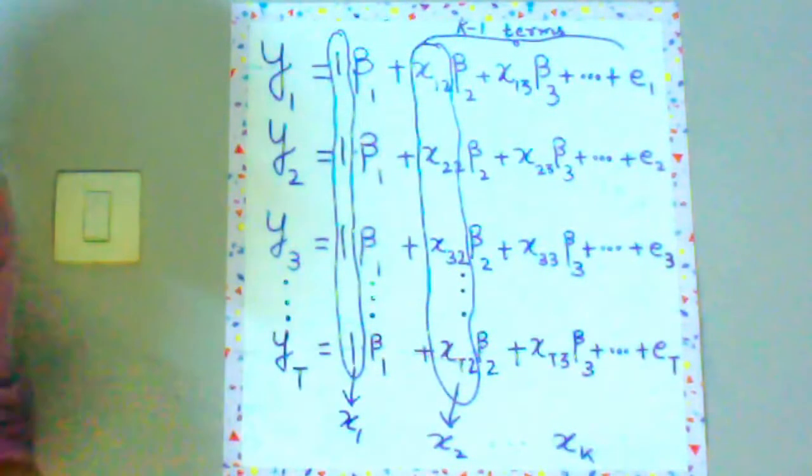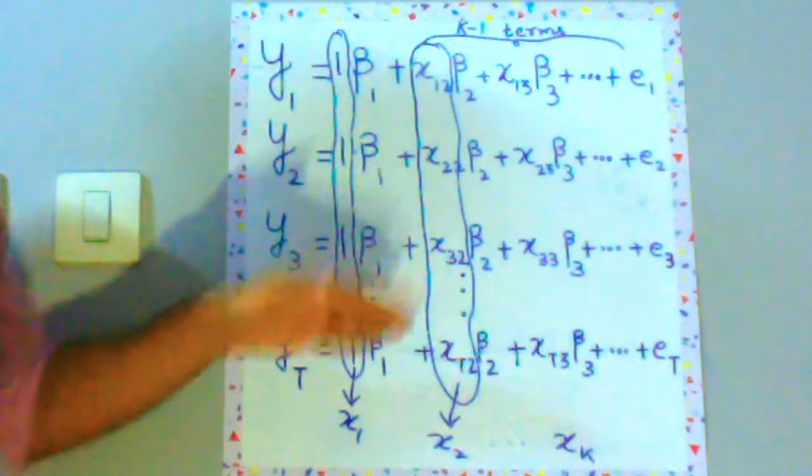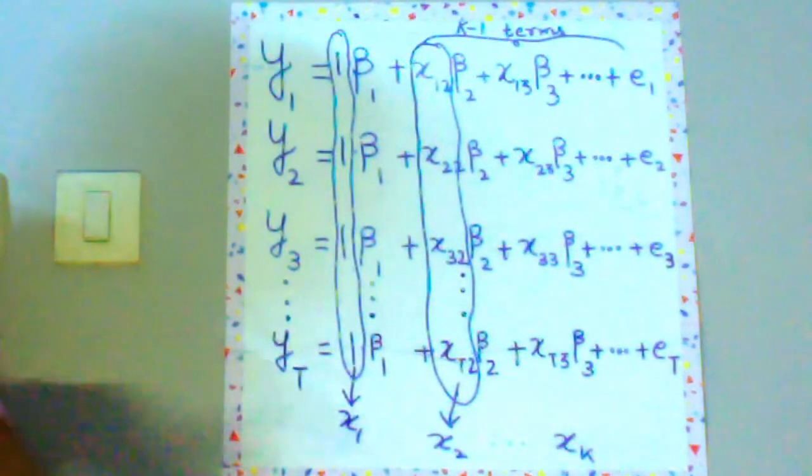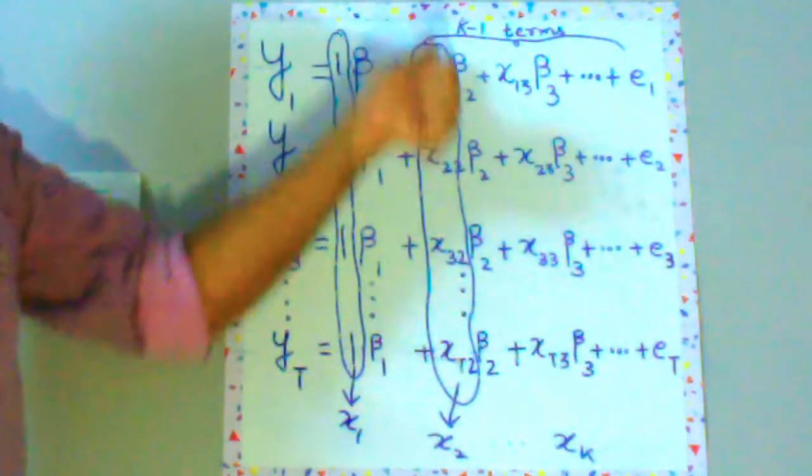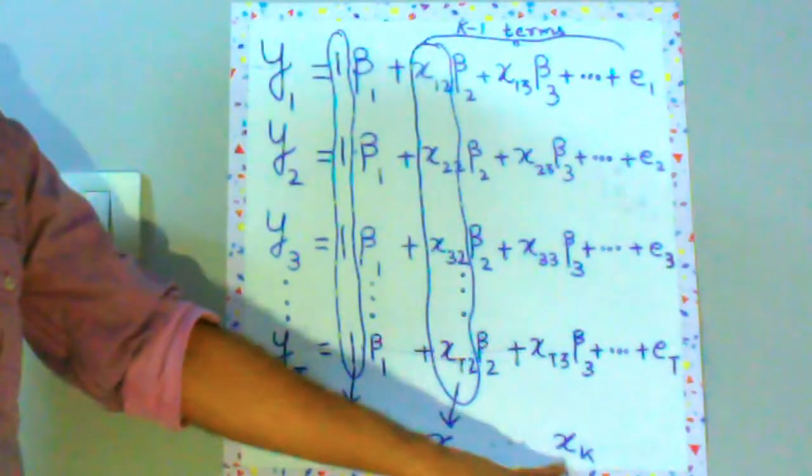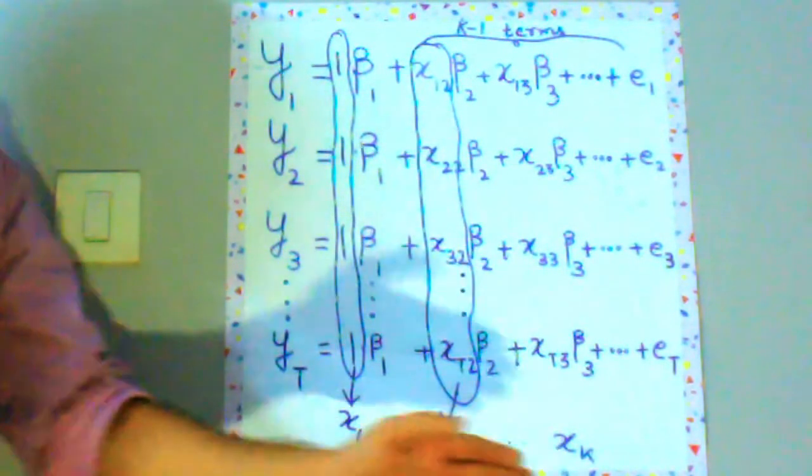But remember x1 is a vector of all 1s and x2 is a vector which has x12, x22, x32 and so on. So basically this is the values of the first predictor and xk would be the values of the last predictor or k-1th predictor.